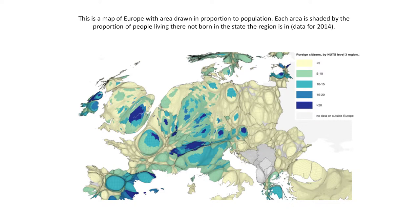Why would we produce maps like this? It's trying to show what the normal pattern of something is across Europe — that is where the immigrants are. Mainly towards the core, apart from the old expats from Britain who head towards the sun, mainly in cities.